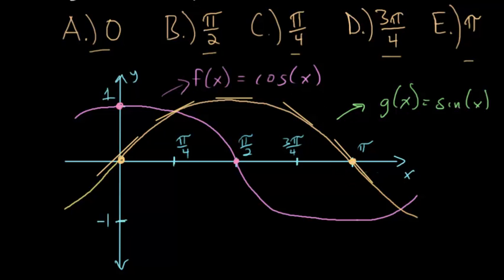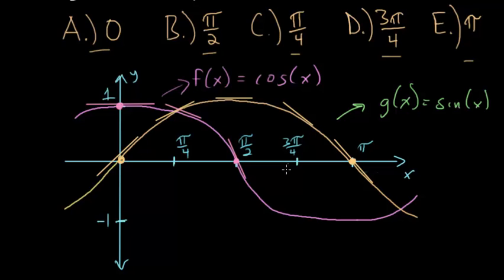Now let's look at the slopes at each of these points for the tangent lines of cosine of x. At x equals 0, the slope of this line would be 0. Here it is at pi over 4. Here's pi over 2. At 3 pi over 4 it looks something like that. And at pi, we're back to 0.